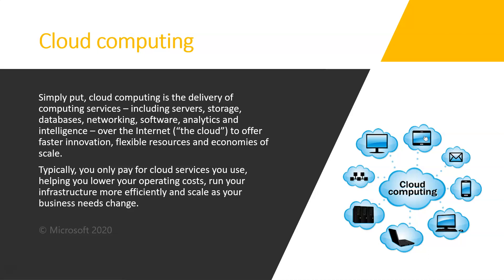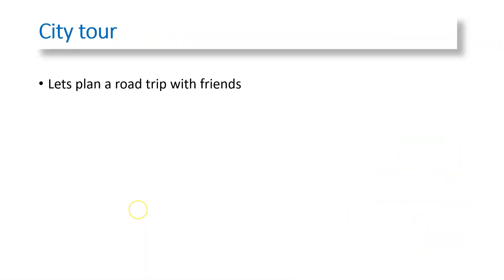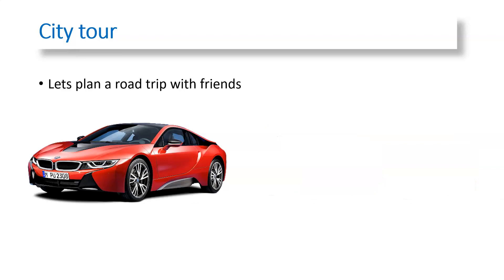It looks a bit confusing, but that's okay — we'll break down this definition with an example. For example, you want to plan a road trip around a city with your close friends. The very first thing that comes to mind is that you need to have a vehicle — you need a car so that you can roam around the city.